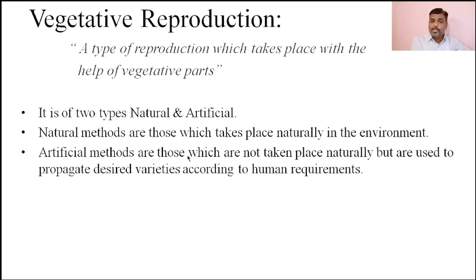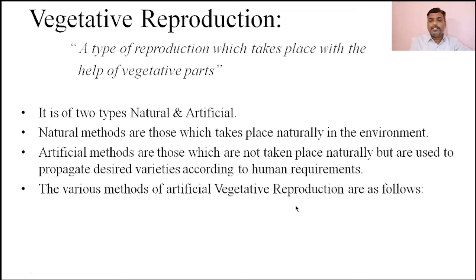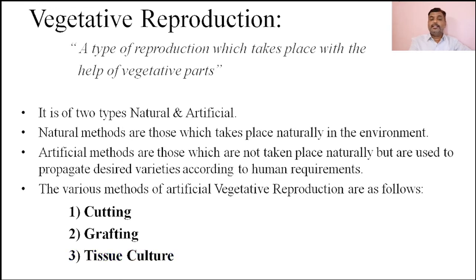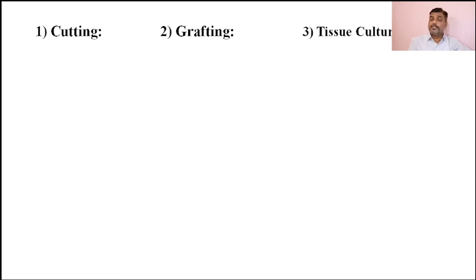Artificial methods are those which do not take place naturally, but are used to propagate desired varieties according to human requirements. As per human requirements they are manipulated, therefore those methods are known as artificial methods of vegetative reproduction. The various methods of artificial vegetative reproduction are: cutting, grafting, and tissue culture.